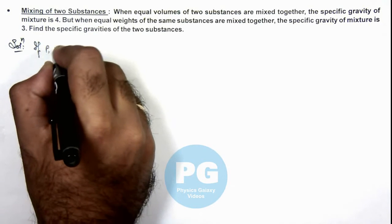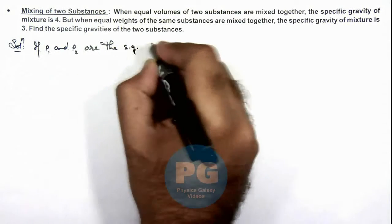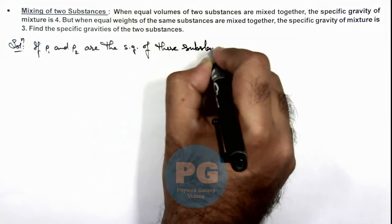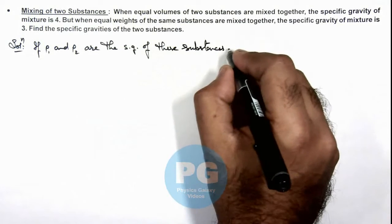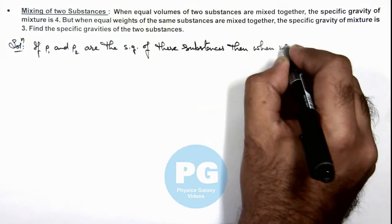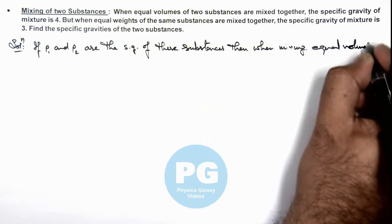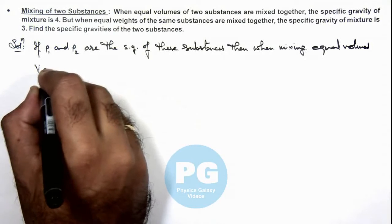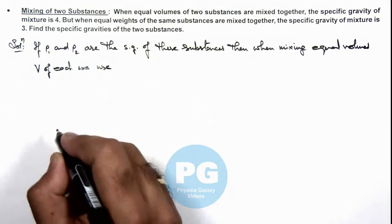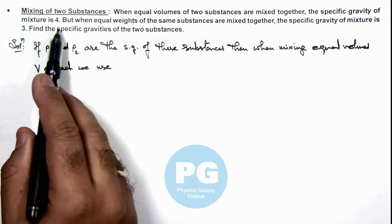We can consider ρ1 and ρ2 are the specific gravities of these substances. When mixing equal volumes V of each, we use the following approach. We are given that when equal volumes are mixed the specific gravity of the mixture is 4.